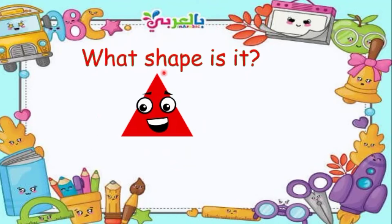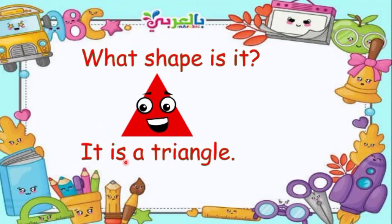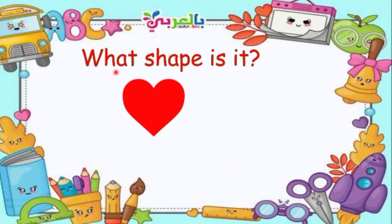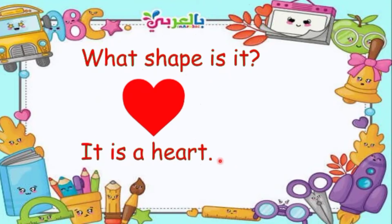What shape is it? It is a triangle. Again, it is a triangle. What shape is it? It is a heart. It is a heart.